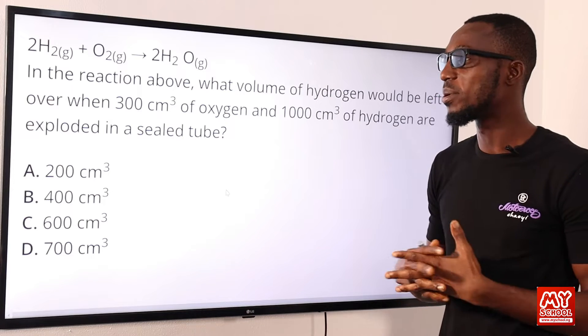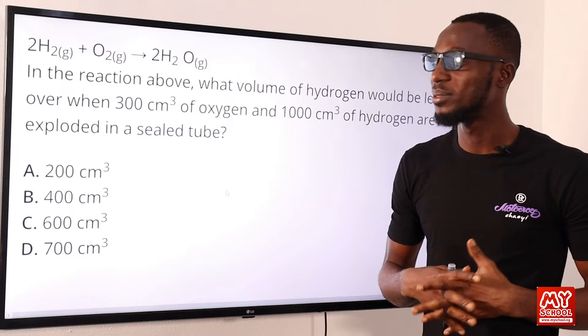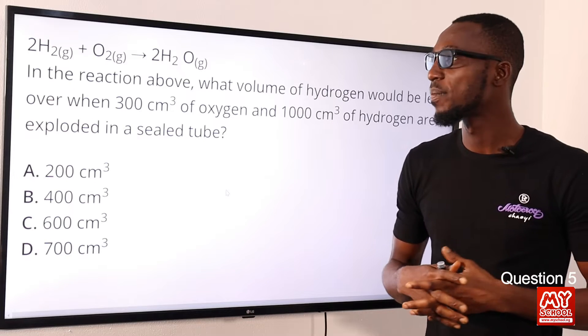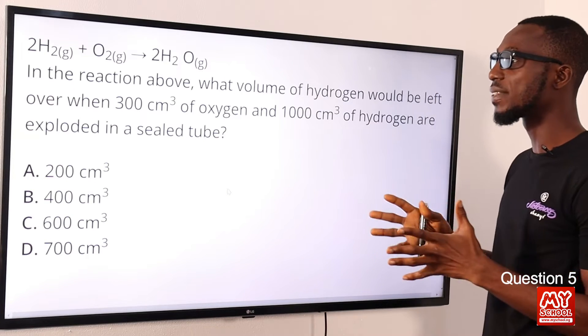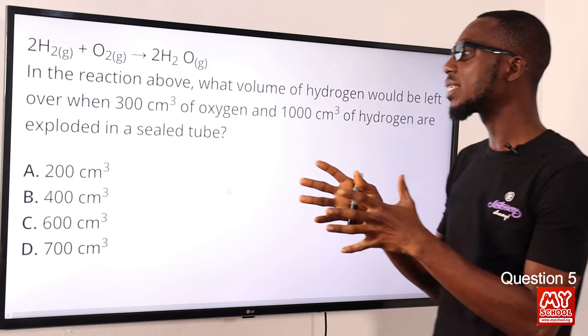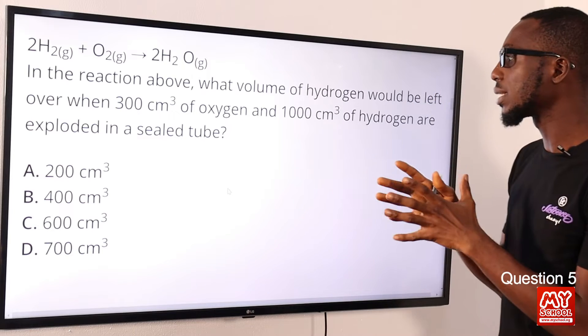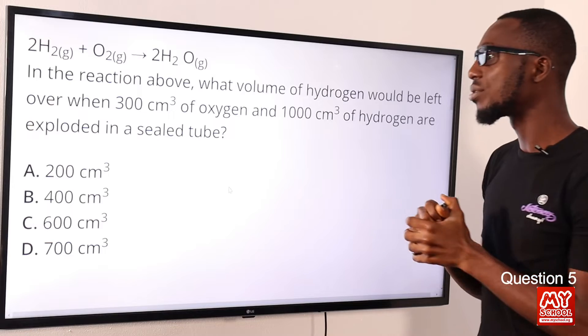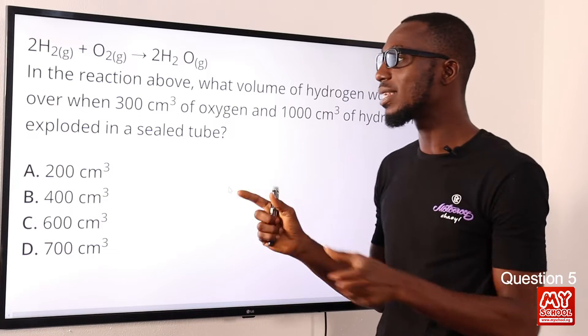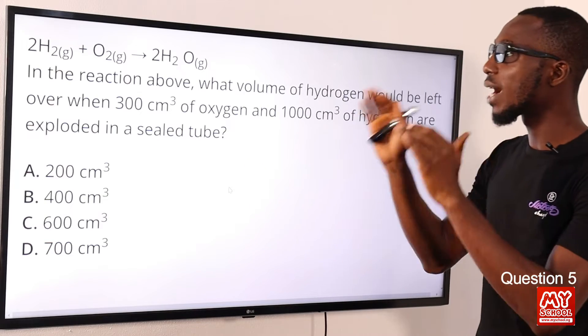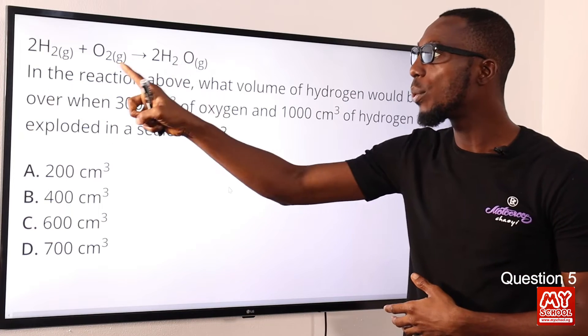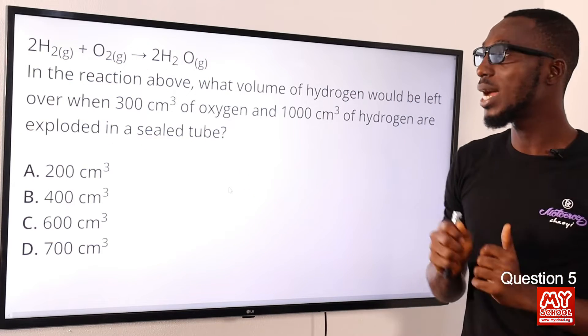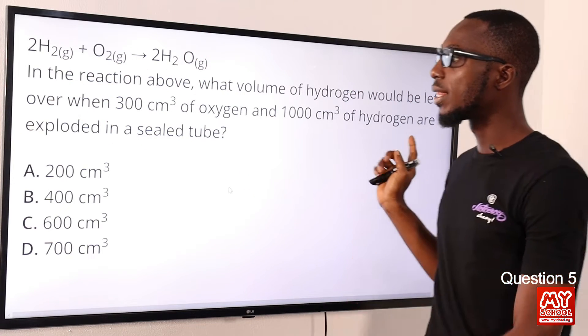Question 5: In the reaction above, what volume of hydrogen would be left over when 300 cm³ of oxygen and 1000 cm³ of hydrogen are exploded in a sealed tube? If we use the reaction we have above: 2H₂(g) + O₂(g) → 2H₂O(g). We can see two moles of hydrogen gas react with one mole of oxygen gas.